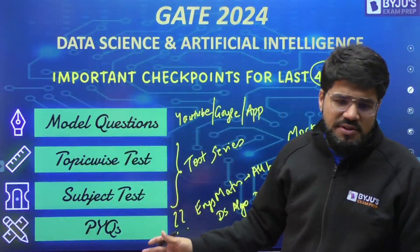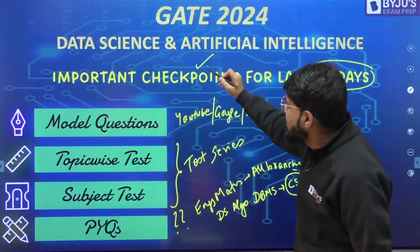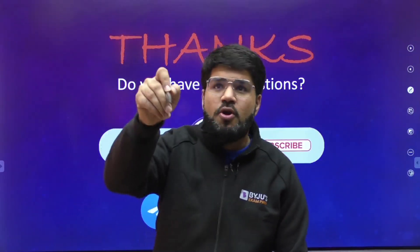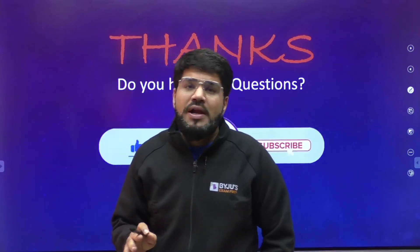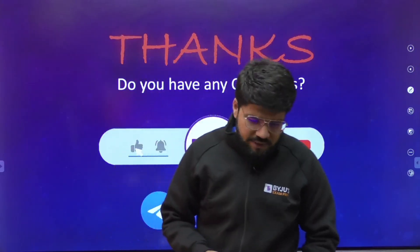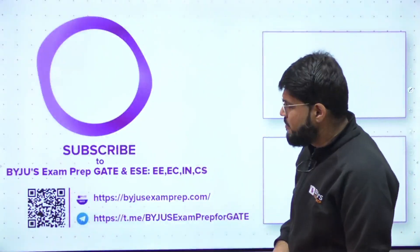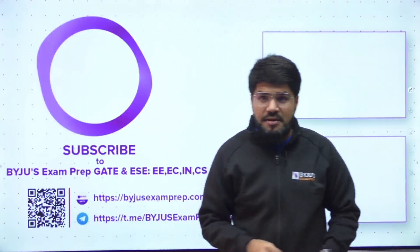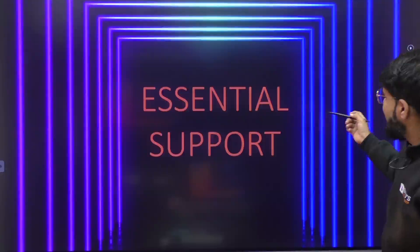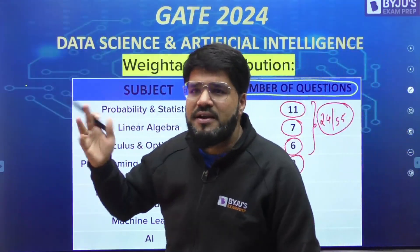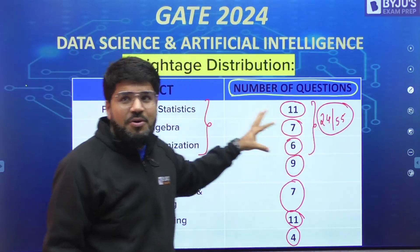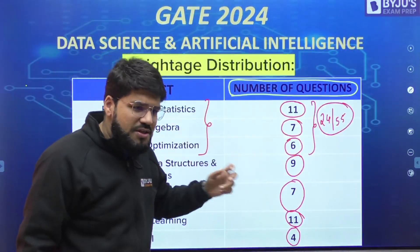So to summarize: subject-wise weightage and essential support for the last 45 days have been covered. There are approximately 24 out of 55 technical questions from Mathematics — nearly 50% of the paper. Aptitude accounts for 10 questions and will be doable for everyone. In the upcoming Sunday session at 11 AM, we'll discuss all math questions: what was the level, easy/moderate/difficult, the solutions, and any questions outside regular Engineering Maths.